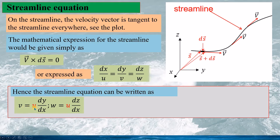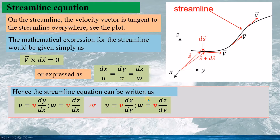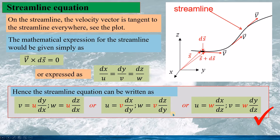In application, the streamline equation can be written using u to represent v and w, or using v to represent u and w, or using w to represent u and v. All these expressions will be used in the following derivation of Bernoulli's equation based on the streamline equations.